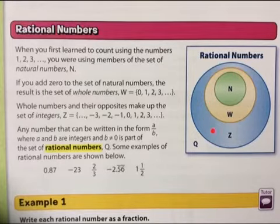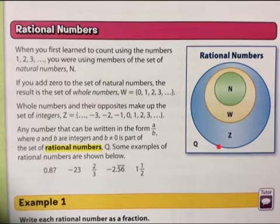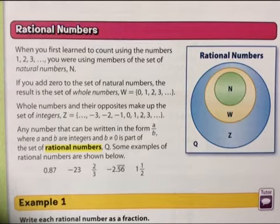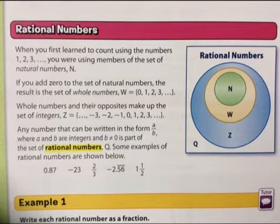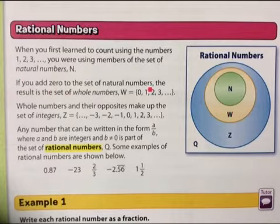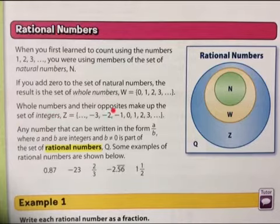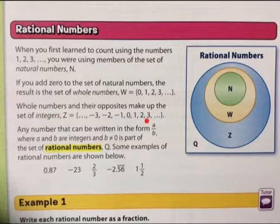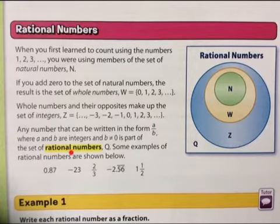Whole numbers are also natural numbers, but natural numbers are not whole numbers. Integers are positive and negative whole numbers that include natural numbers and the number 0. Rational numbers are fractions, integers, whole numbers, and natural numbers. But an integer cannot be a rational number — a whole number cannot be an integer — a natural number cannot be a whole number. They just go in; it's like an umbrella. When you first learn to count using 1, 2, 3, you were using members of a set called natural numbers. If you add 0 to the natural numbers, the result is the whole numbers. The whole numbers and their opposites make up the set of integers — negative numbers and positive whole numbers, including 0. Any number that can be written in the form A/B without B being 0, because you can't divide by 0, is part of the set of rational numbers.